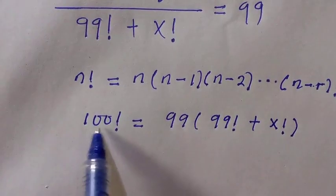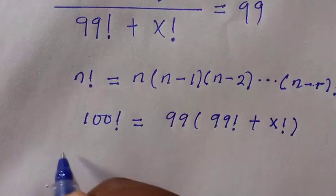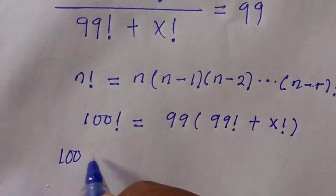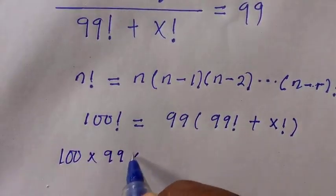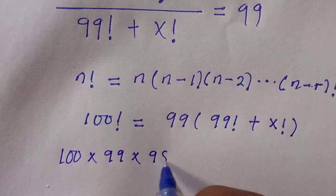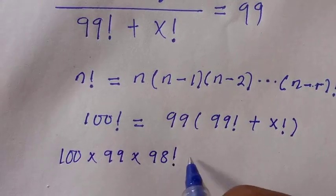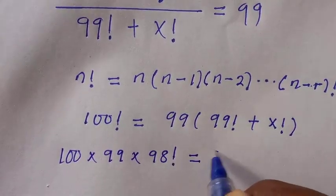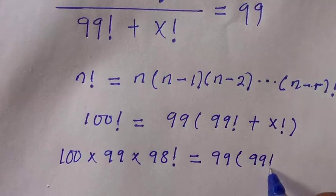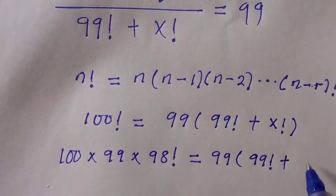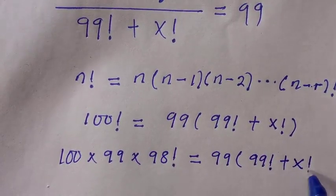Here we choose 100 factorial. If I break it into 100 multiplied by 99 multiplied by 98 factorial equals 99 bracket, 99 factorial plus x factorial.